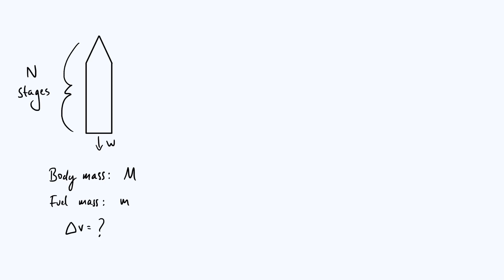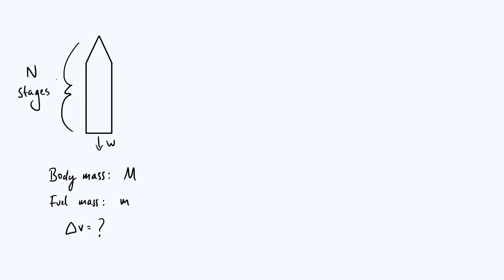I've got a diagram here illustrating the setup where we have a rocket with a body mass of capital M — body mass meaning just the solid mass of the structure of the rocket itself. We've got an additional mass of lowercase m which is the fuel, and the rocket is burning the fuel and ejecting the exhaust gases at a constant speed of w relative to the rocket itself, and we've got n stages which we are going to assume have equal masses. So each stage is going to have a solid mass of M over n and a mass of fuel of m over n.